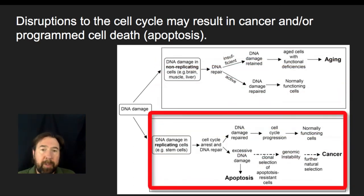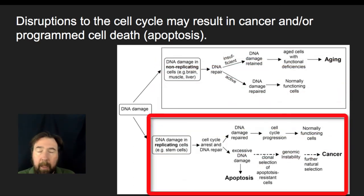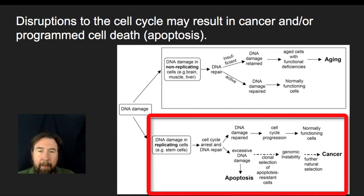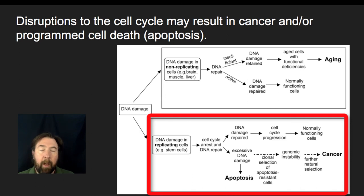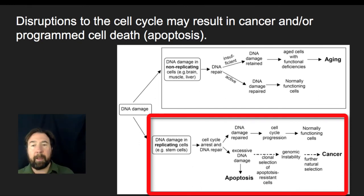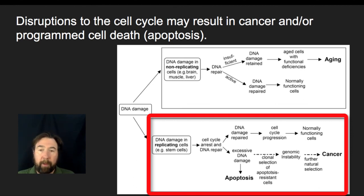If the DNA damage is in cells that are going to be actively replicating — these could be stem cells or highly dividing tissue like epithelial cells — what we would see is that the cell cycle could stop and allow for DNA repair. If there's damage to the DNA, that would be a signal not to proceed past that G2 checkpoint. That DNA damage could lead to the cell being repaired, then the cell cycle progressing, and you'll get normal cell division.